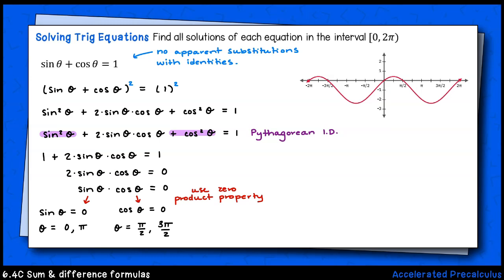Using the zero product property, I've got a total of four possible solutions. From the sine theta, I have zero and π. From the cosine theta, I have π over two and three π over two.